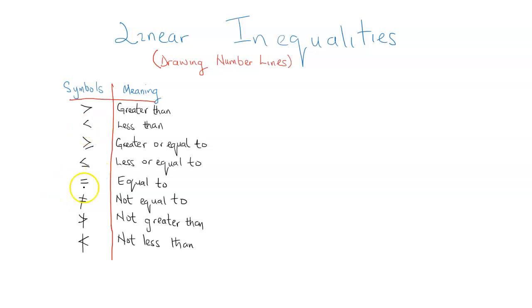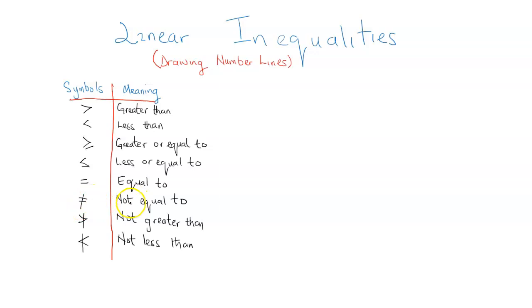Here are the inequality symbols: greater than, less than, greater or equal to, less or equal to, the equal sign, not equal to, not greater than, and not less than.